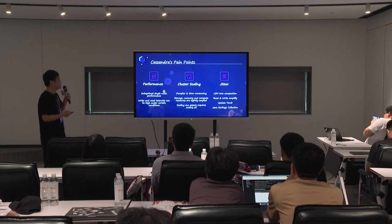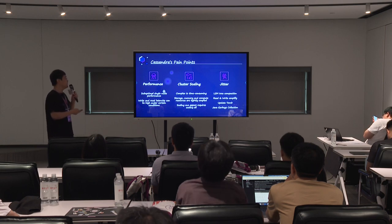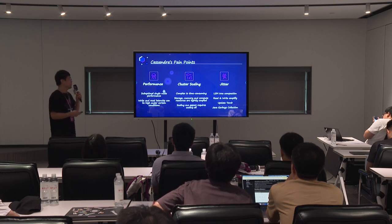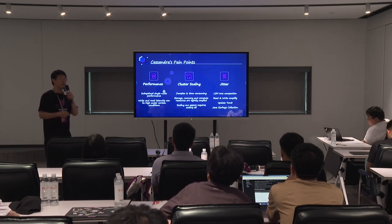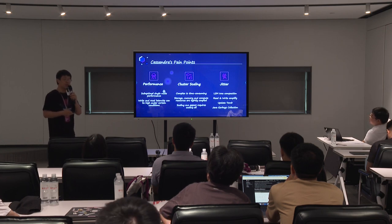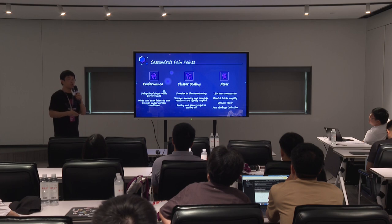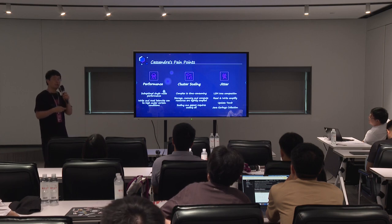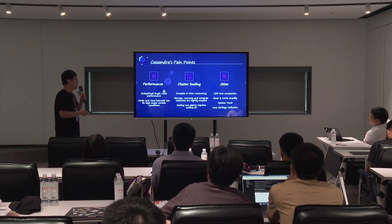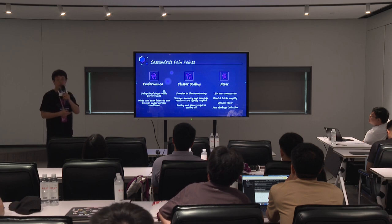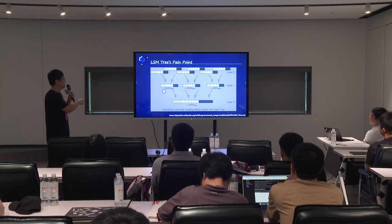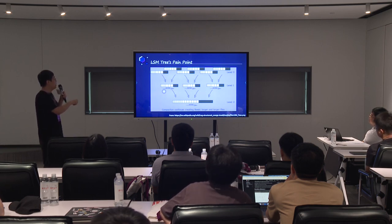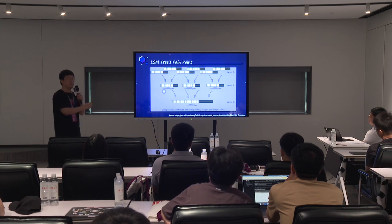The third pain point is latency jitter. This is mostly introduced by the LSM tree. For example, the LSM tree will do compaction and will have read and write amplification. Also, delete and update in LSM tree is slow. This will all cause long tail latency. Additionally, Cassandra is written in Java, and Java GC will also make your latency unstable. This is a picture of the LSM tree — all systems based on LSM tree will have these issues.